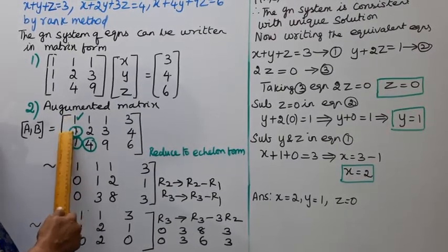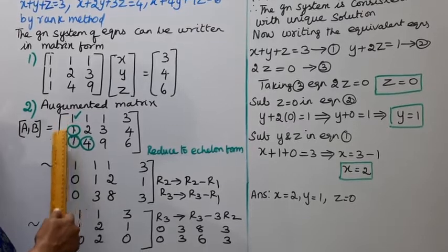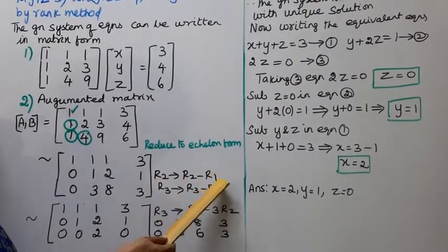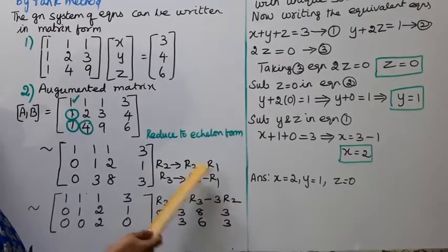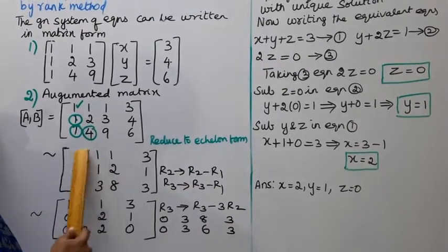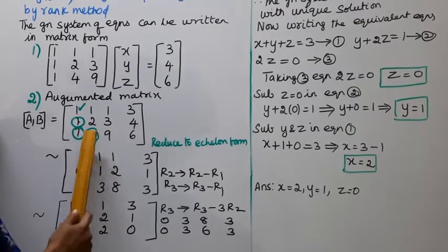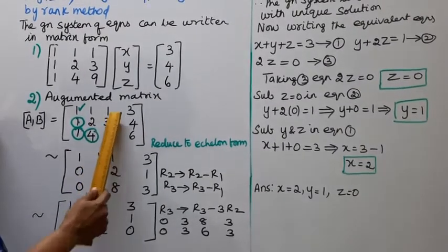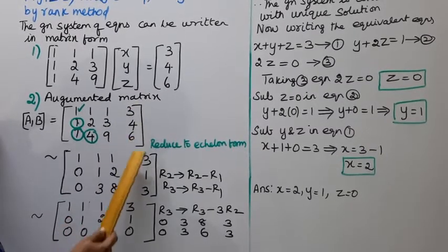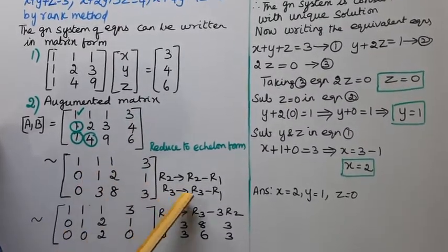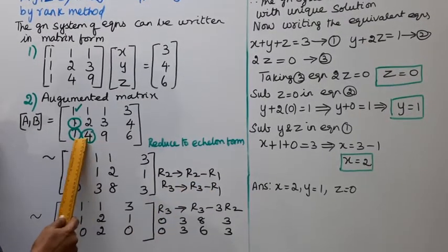Take R2 as R2 minus R1. R3 as R3 minus R1.